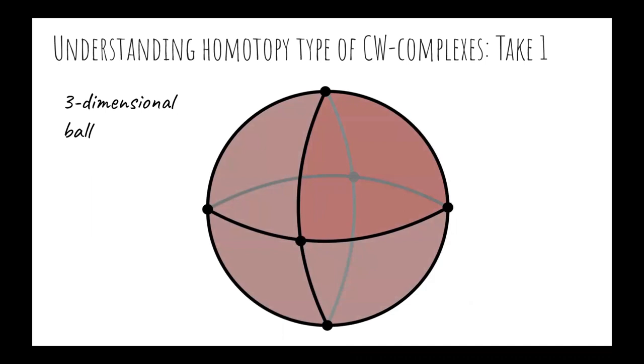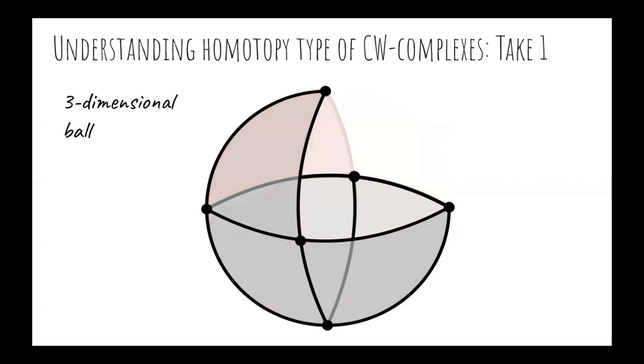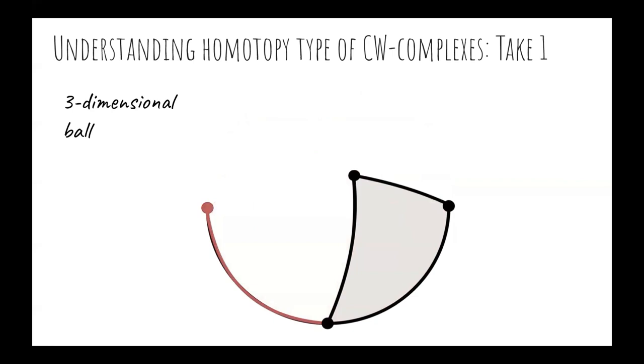e^3, the filling of the ball, and e^2, one of the two cells of the cortex. We remove this pair of cells performing the first collapse. Then, we repeat this process iteratively. Each time, we identify a pair of cells of consecutive dimension in such a way one of the cells is a free face of the other.